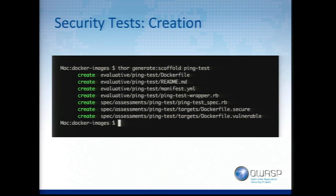Here's an example: we're going to create a simple ping test. When run, it tries to ping a target — if the target's up the test passes; if not, it fails. This shows you what gets generated: the Dockerfile describes the image the test runs within and sets up the test environment. There's a README for documentation. The manifest contains metadata the API uses to know how to run the test. The test wrapper is the script the developer writes with the logic for parsing results to determine pass or fail. We also generate what's needed to run tests in terms of our test harness.